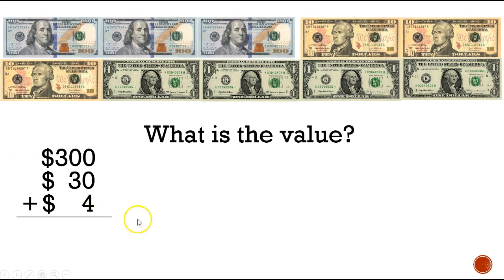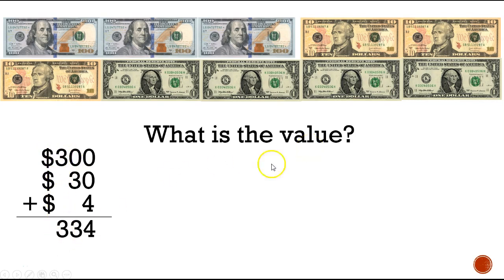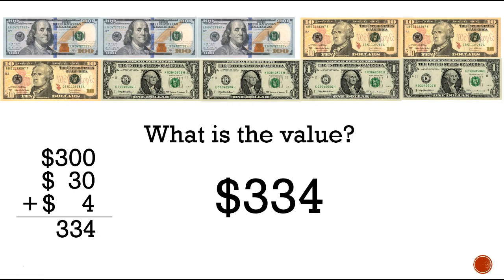Now you should have added all of this together. You should have said: in the ones column, zero plus zero is zero, and then four. The tens column has a zero and nothing else, so just bring down the three. The hundreds column has a three and nothing else to add, so bring it down. The value we have is three hundred and thirty-four dollars.